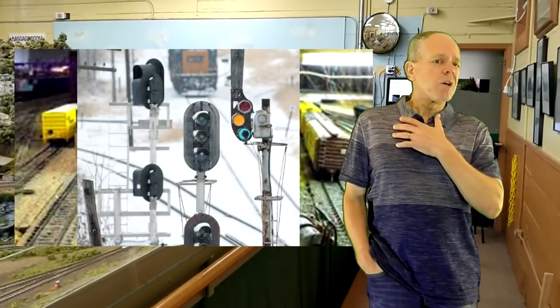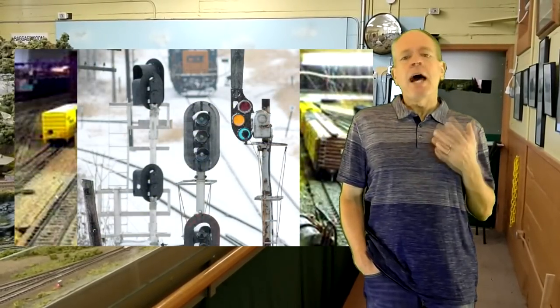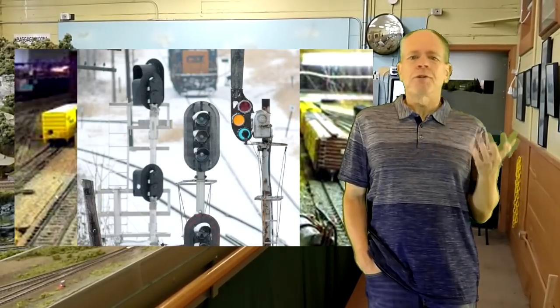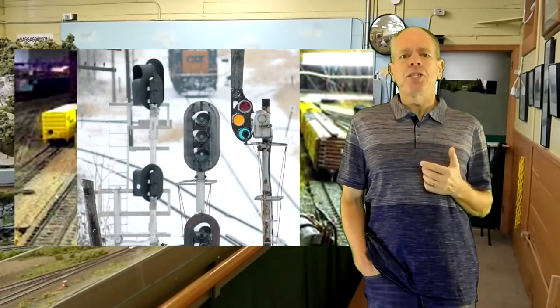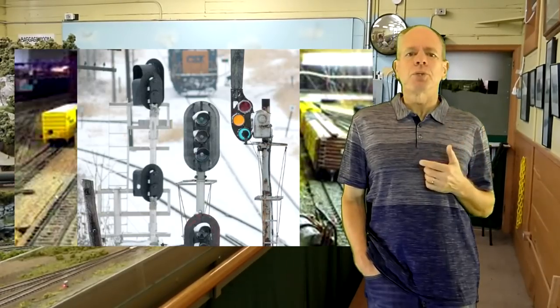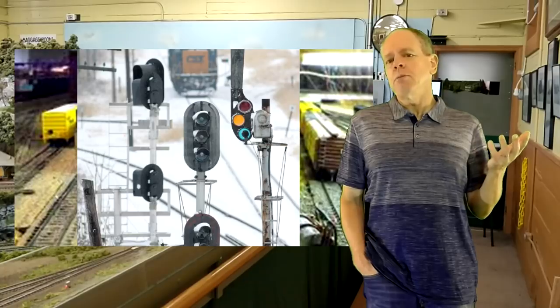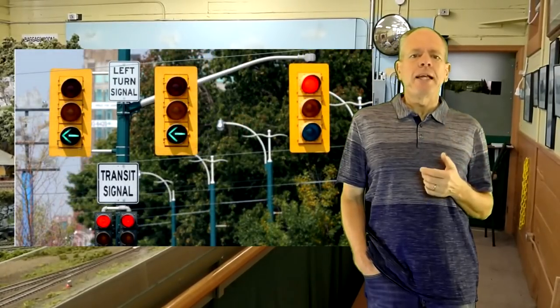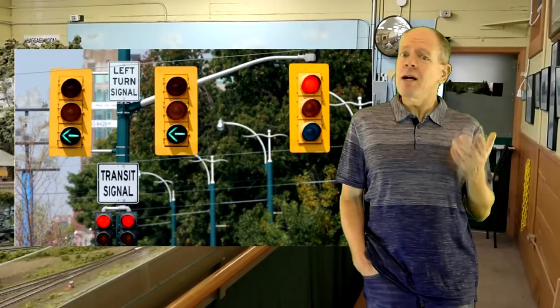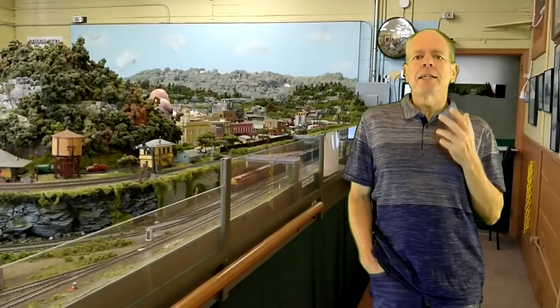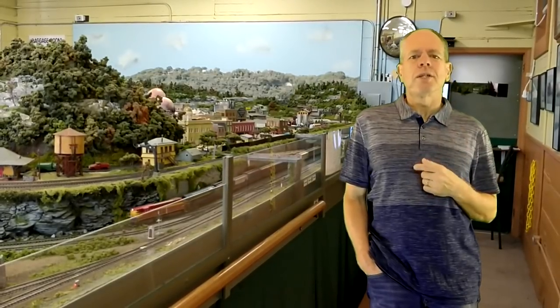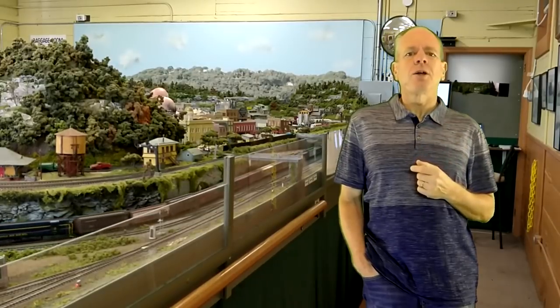When talking with model railroaders, I get the impression we are all signaling system experts. After all, signals are just a collection of red, yellow and green lamps that tell the engineer whether he is allowed to proceed and if so, with what speed. Not much different than what we experience on a daily basis in road traffic, right? Well, wrong. There is much more to railroad signaling and I think part of the reason for a lot of confusion really is that many of us are too fast in comparing railroad signaling systems to traffic lights, which we all know and understand.